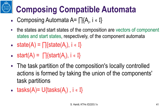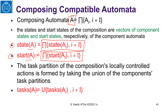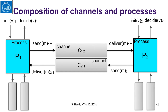The state of the composed automaton A is the Cartesian product of all the states of the component automata. The task partition, which groups the locally controlled actions of the composition, is formed by taking the union of the components' task partitions. Now let us take an example and do that in detail.